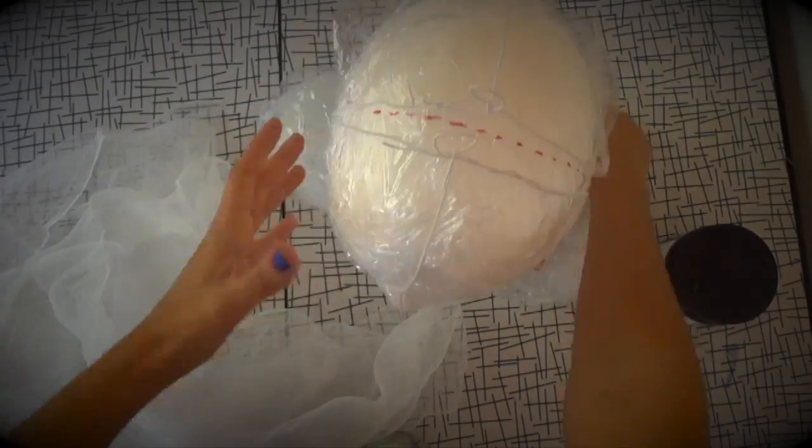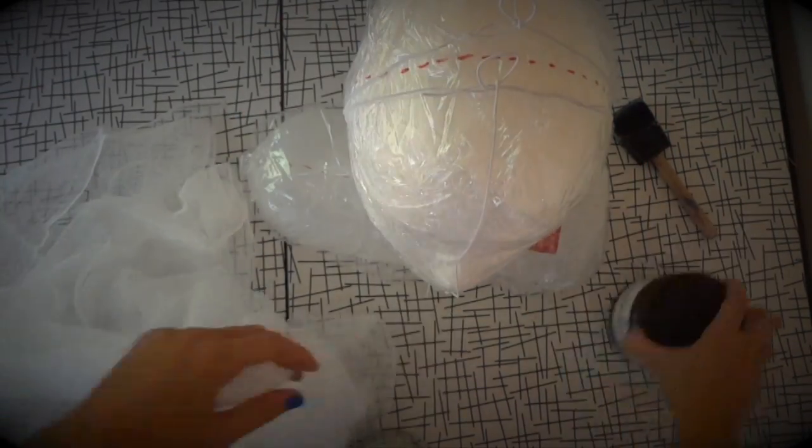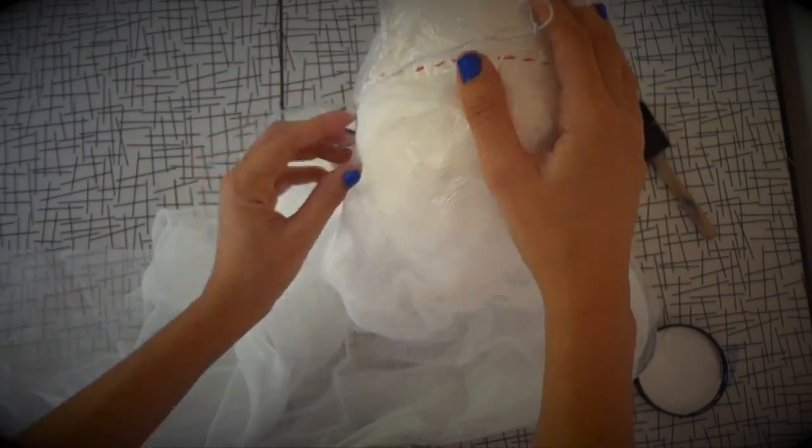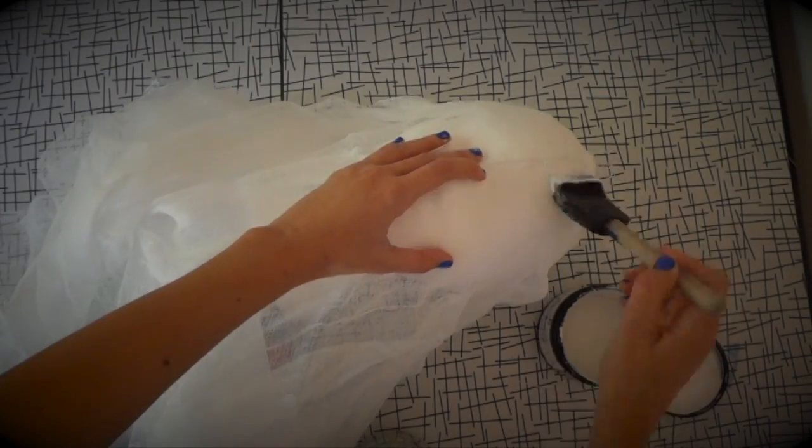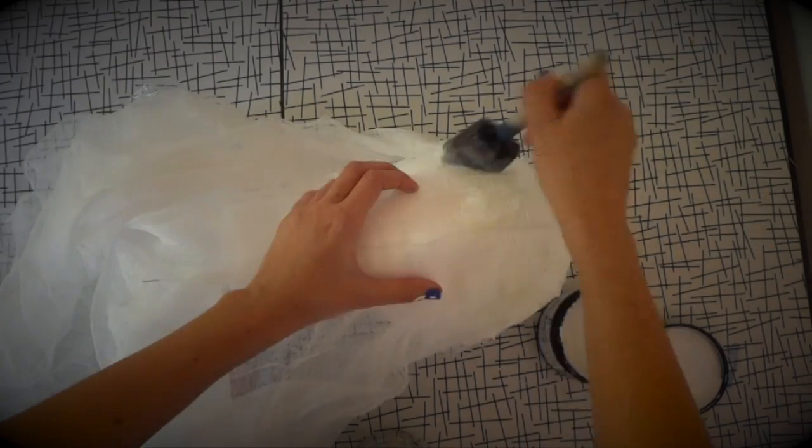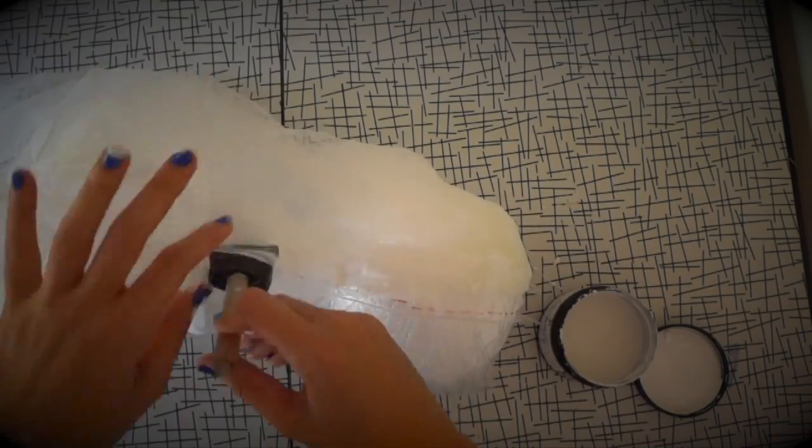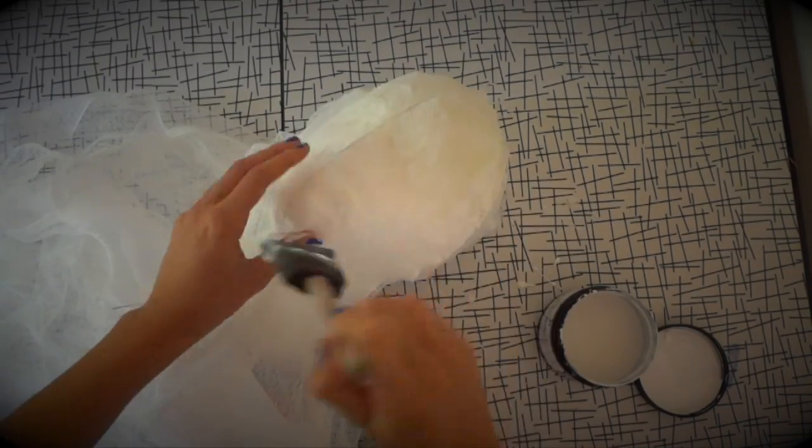Now for the messy part. I'm going to do the front first and I'm going to begin at the top. I'm using that wire around the side as a guide and I'm not going to put any fabric beyond it. This is two layers of cheesecloth and I'm using the sponge brush to apply the medium to the fabric.